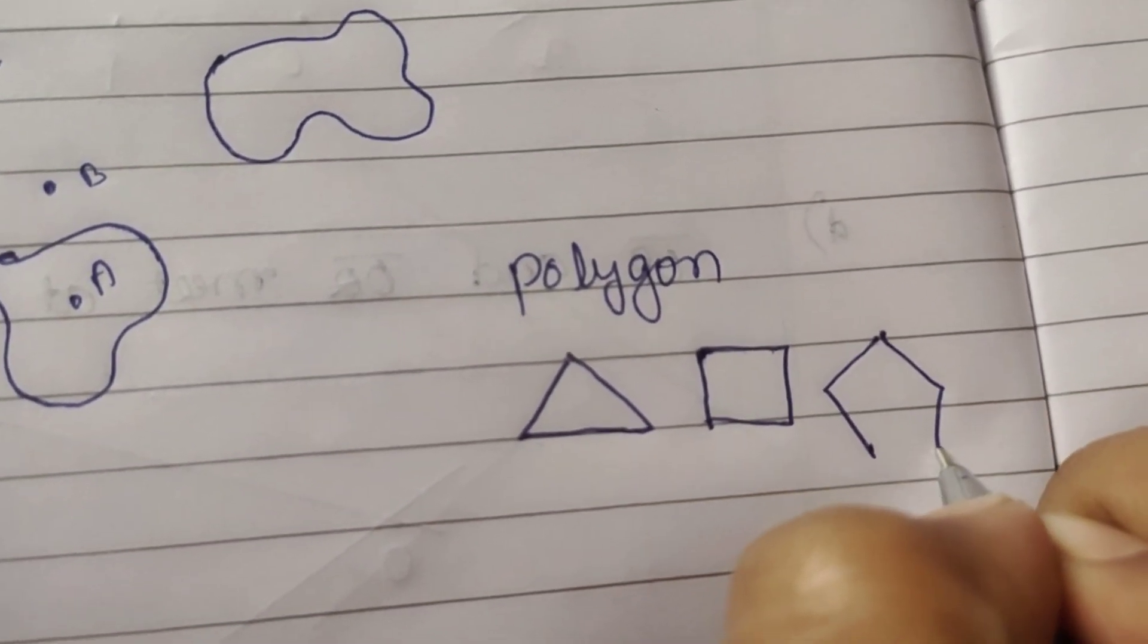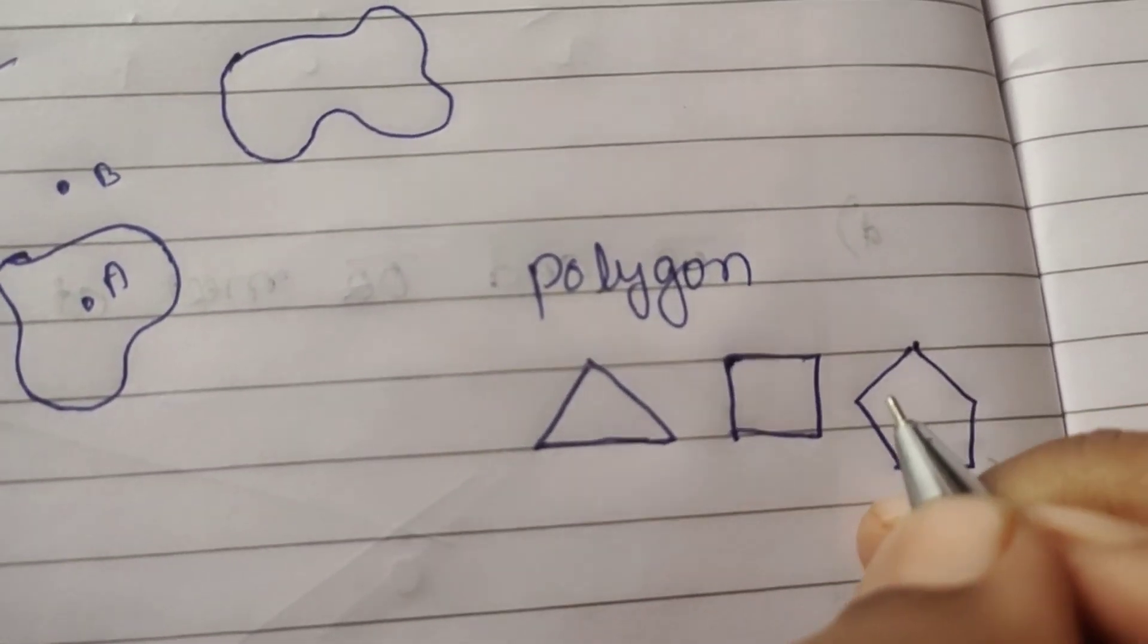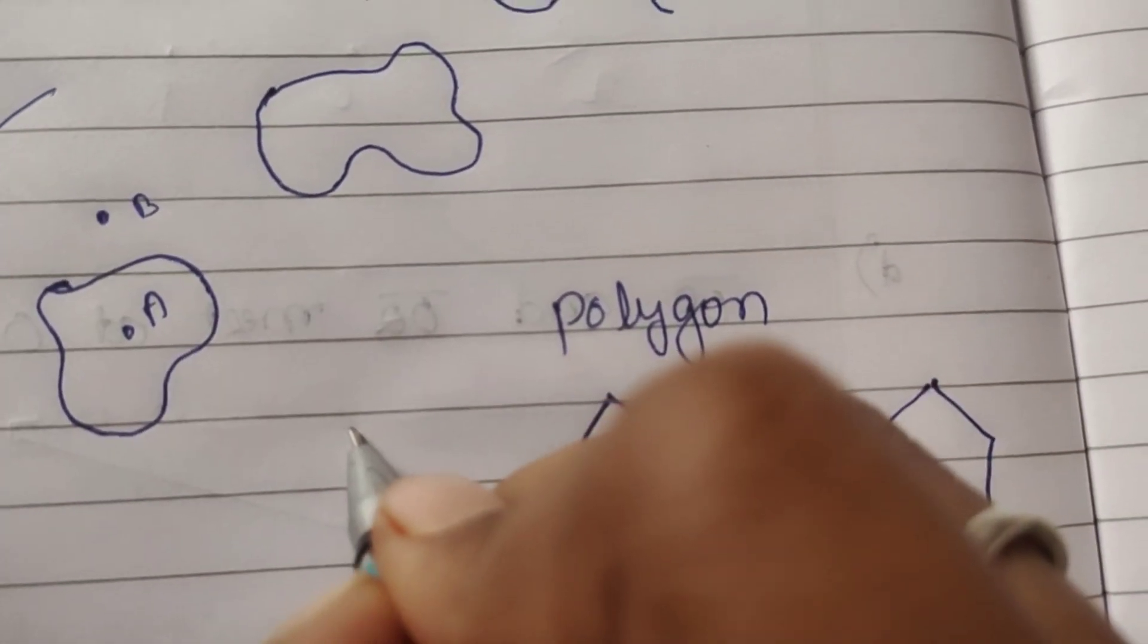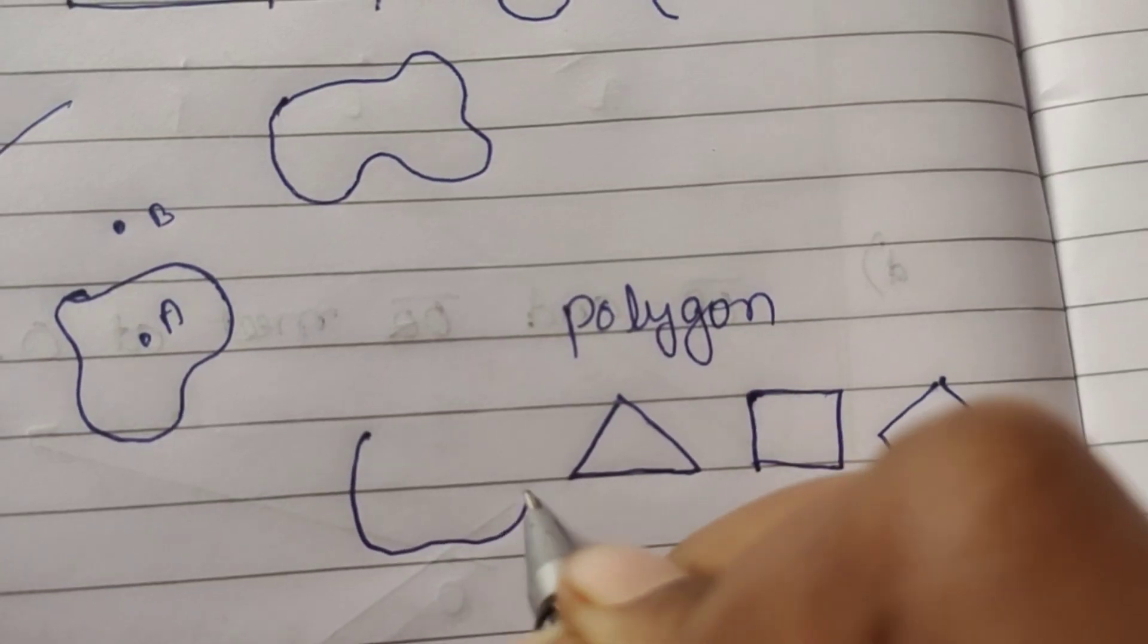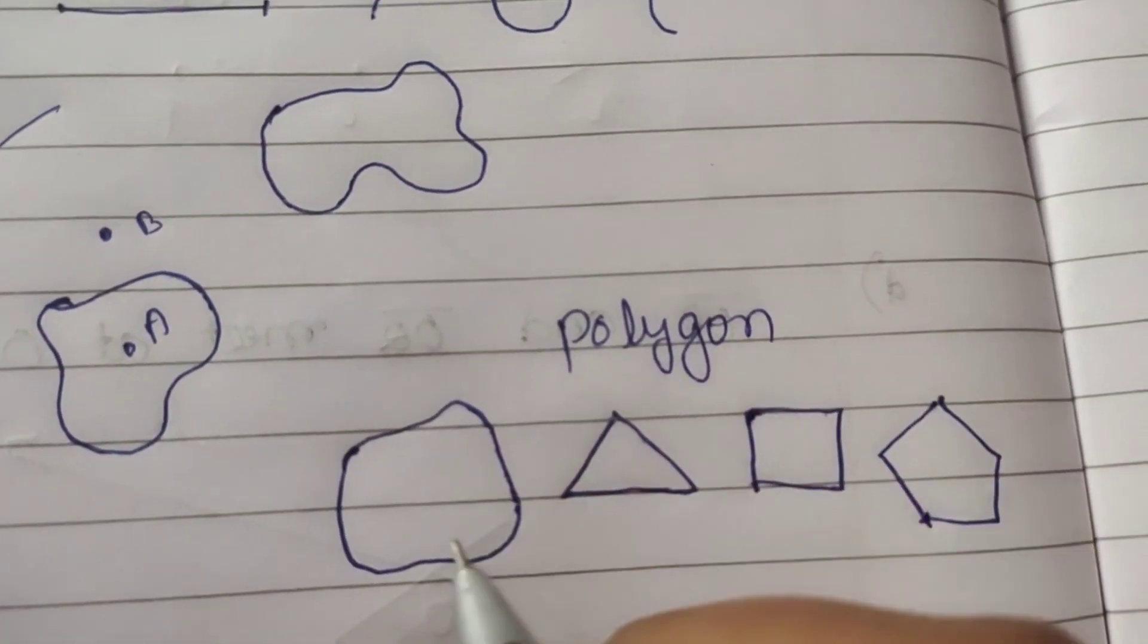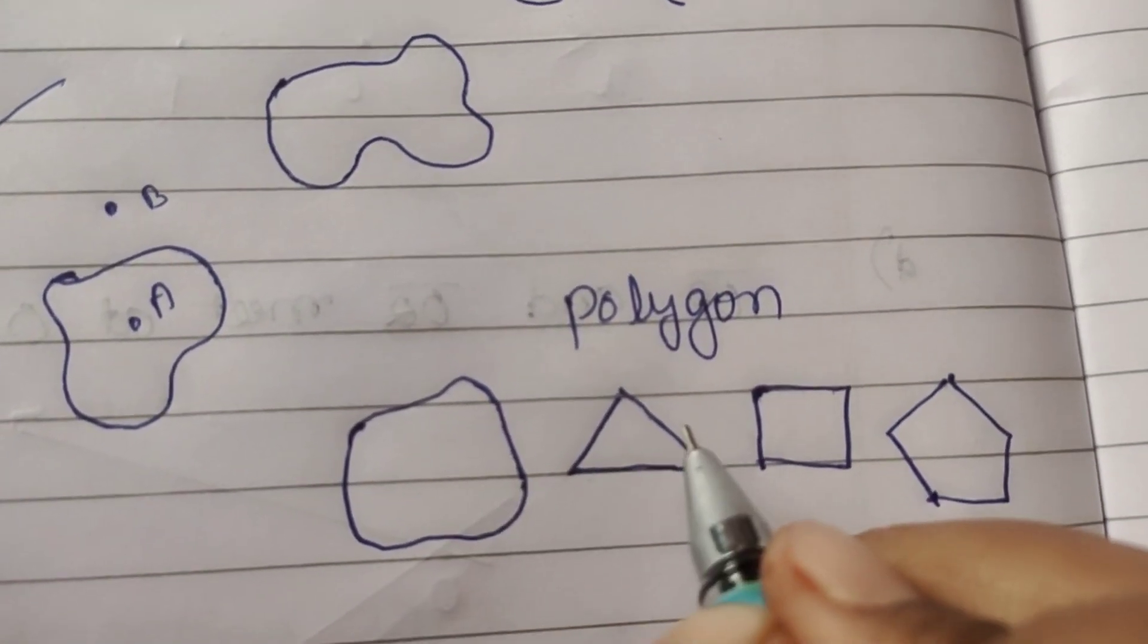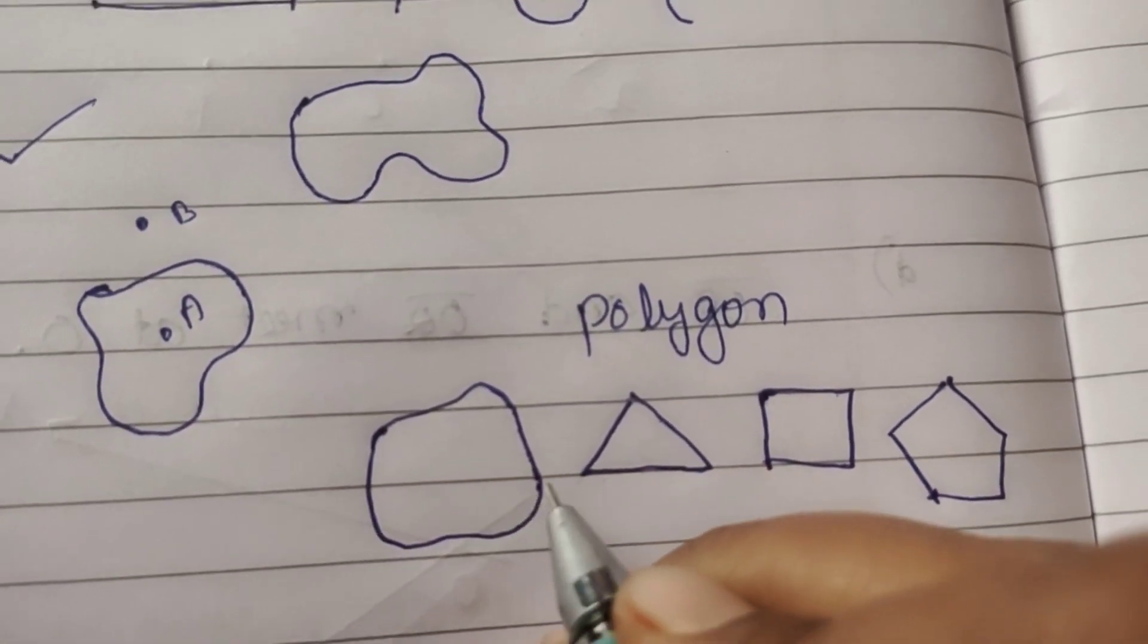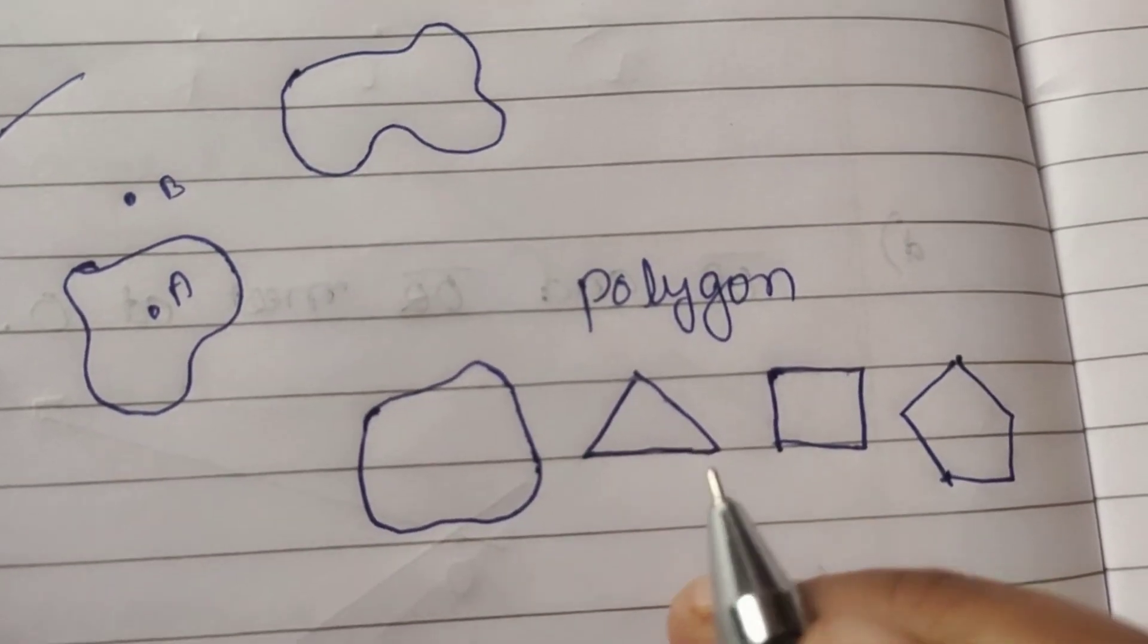This is not polygon. This is not polygon because it must be made of straight line segments. This is a closed curve, not a polygon.